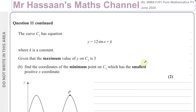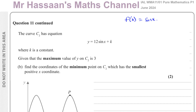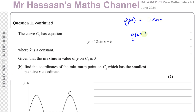Now for part b. The curve C2 has equation y equals 12 sine x plus k. If we call g(x) equal to 12 sine x, then this is g(x) plus k — a translation of k units vertically. If k is positive we go up; if k is negative we go down.